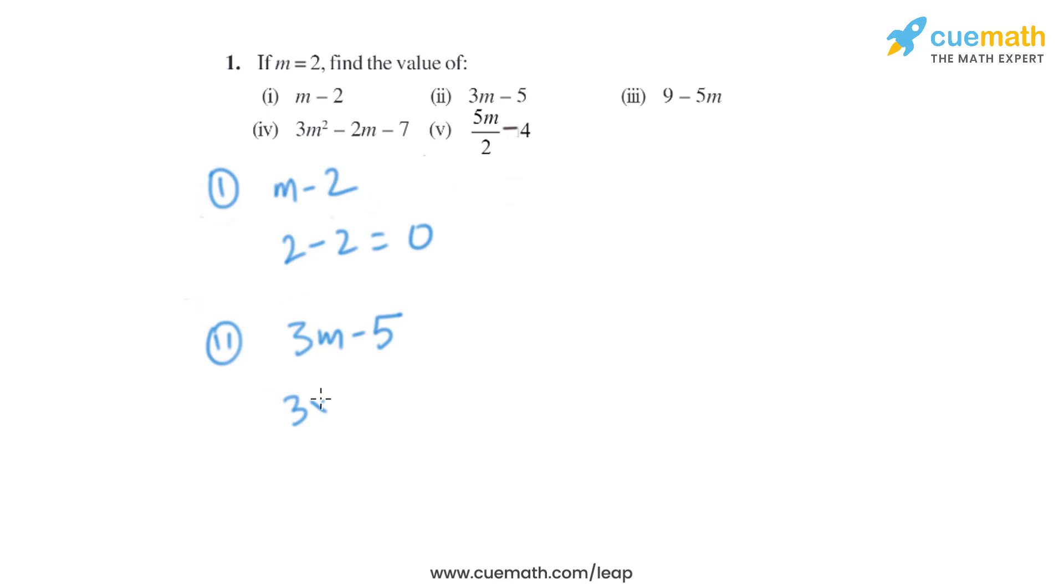Now let's move on to the next part. It is 3m minus 5. So when we put the value of m equals to 2, it will be 3 into 2 minus 5, which is 6 minus 5, which is same as 1.